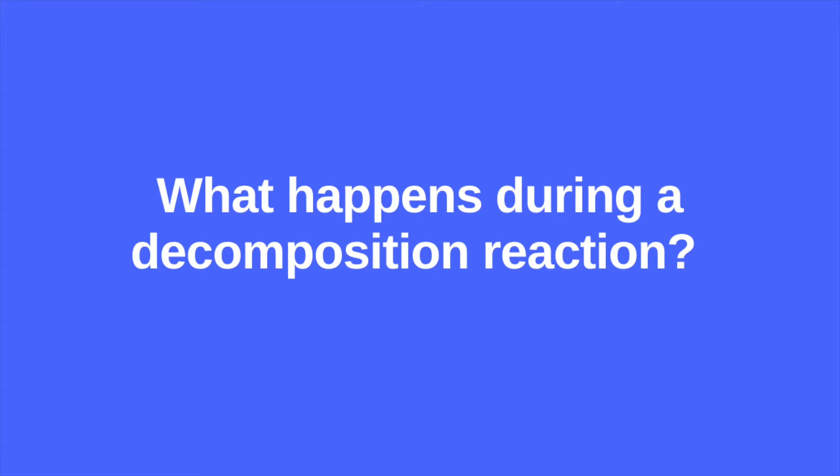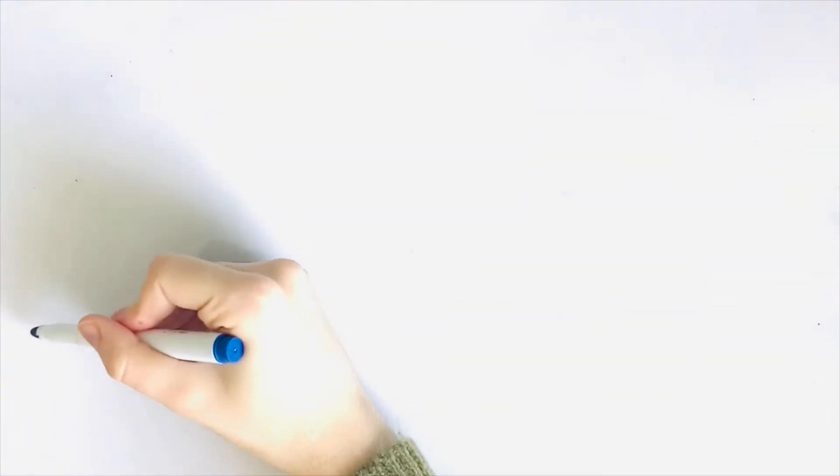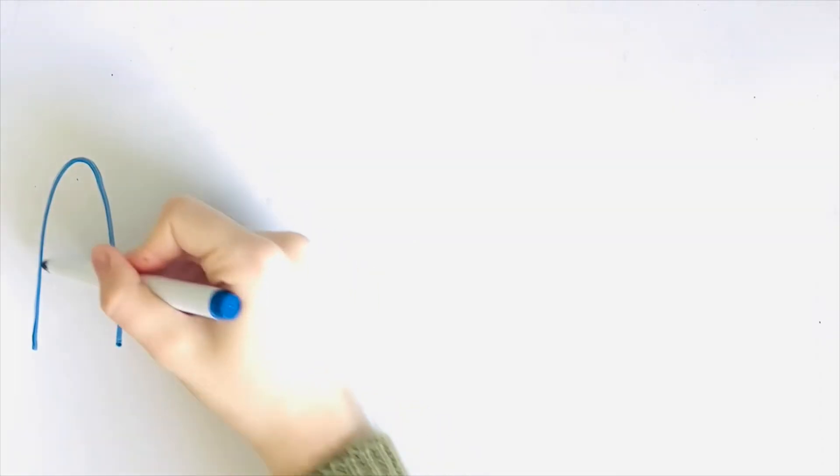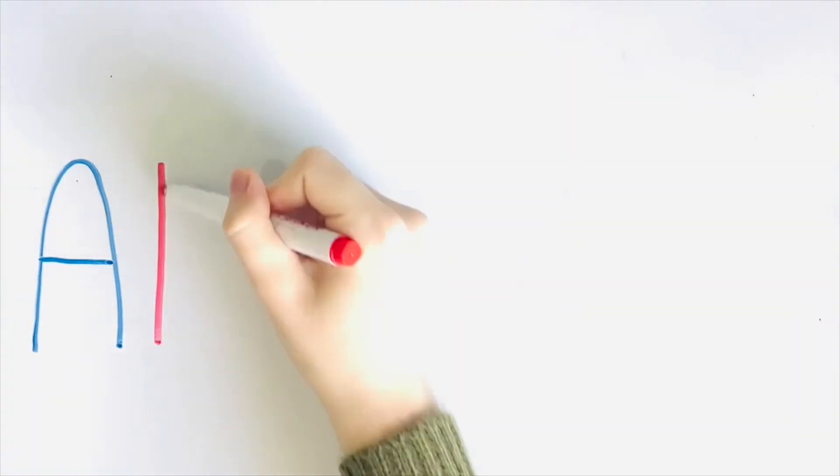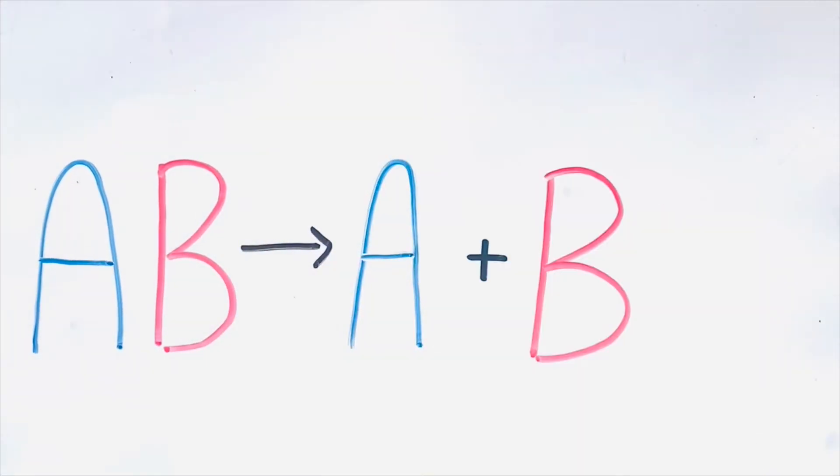What happens during a decomposition reaction? During this reaction, a compound breaks down into two elements or compounds and we use the formula AB yields A plus B to represent it.